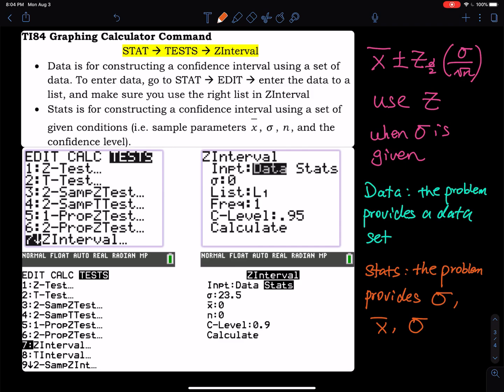When you use a z procedure, you go to STAT, hit the STAT key, then go to TEST, which is all the way to the right. Then you select Z Interval, not Z Test. Click the STAT key, go to TEST all the way to the right, and select Z Interval.